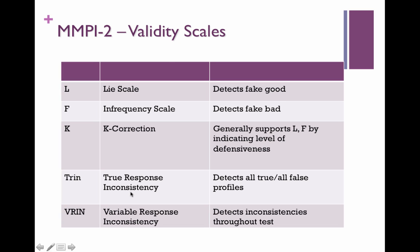TRIN stands for true response inconsistency — it's looking for the person who just went through and responded all true or all false, accounting for reverse-coded items. VRIN, variable response inconsistency, is looking for that random profile where people may have just bubbled in answers to pass the time without reading every question carefully. All of these scales are used to determine whether the profile and the test is even valid.